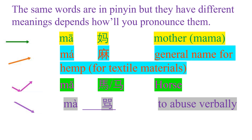Did you get my point? Let's read again: MA — MA — MA — MA. And the neutral tone MA is always used at the end of a question. For example, 'Nǐ hǎo ma' — meaning 'How are you?' or as a question particle at the end.